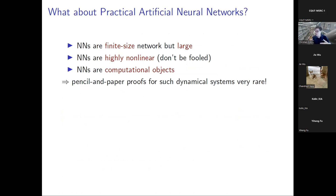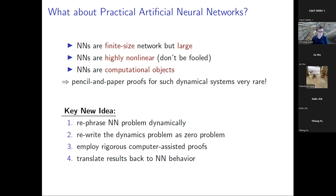Neural networks in practice are finite-size but very large. They are highly nonlinear — even though something like a ReLU may fool you into thinking it's piecewise linear, once you iterate and combine, these are of course highly nonlinear systems. They are primarily used as computational objects, so it's often difficult to access what's happening in the computation. How would you do a pencil-and-paper proof to validate that the neural network is doing the right thing? For such dynamical systems — not small, not very large, probably without many symmetries — pencil-and-paper proofs are usually out.